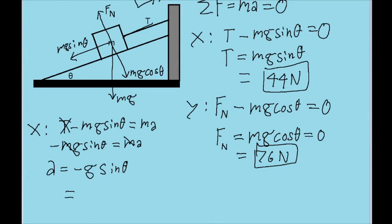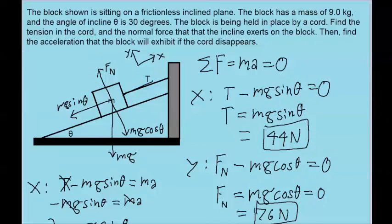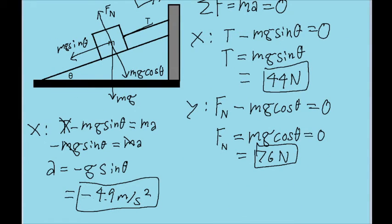So we just plug in 9.8 meters per second squared for g, and then theta in for the angle, and we find an acceleration of negative 4.9 meters per second squared. So this is our acceleration for the block. Now if the problem was asking for the magnitude of acceleration, then we can ignore the minus sign and just give this part of the answer right here.